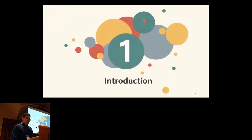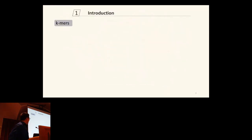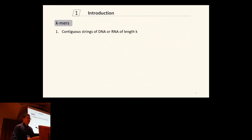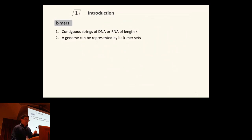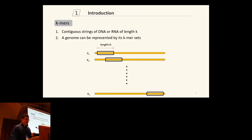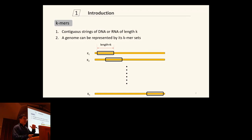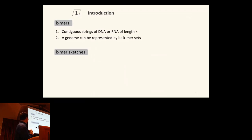Let's start with some basic definitions. K-mers are continuous substrings of DNA or RNA of length K. There are many ways to generate k-mers, and we can use k-mers to represent genomic characteristics. Given an arbitrary DNA sequence, we can use a sliding window of length K from the beginning to the end of the genome to enumerate all possible k-mers. This k-mer set can be recognized as a signature of the given genome. The second definition is k-mer sketches.